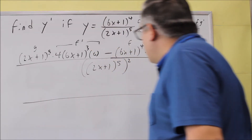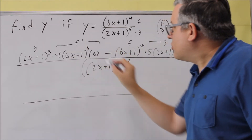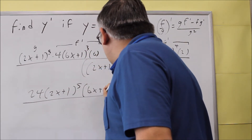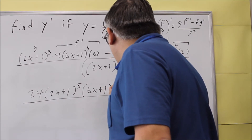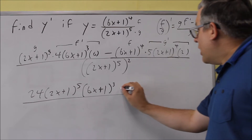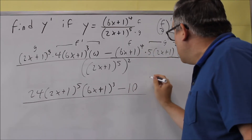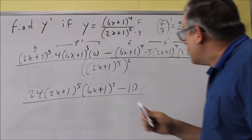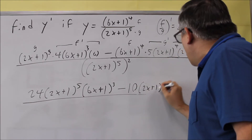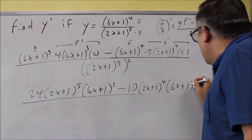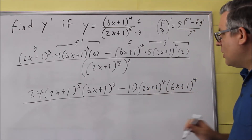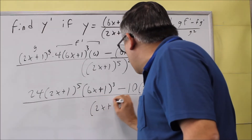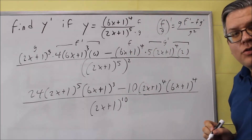Let's simplify the top. We combine the coefficients: 4 times 6 gives us 24, with (2x plus 1) to the fifth and (6x plus 1) to the third. Then minus 5 times 2 gives 10, with (2x plus 1) to the fourth and (6x plus 1) to the fourth. On the bottom, you have a power raised to a power, so you multiply the exponents: (2x plus 1) to the fifth, squared, becomes (2x plus 1) to the tenth.